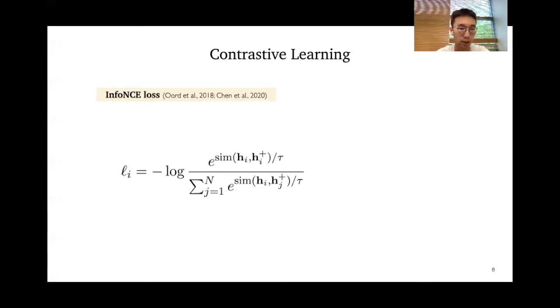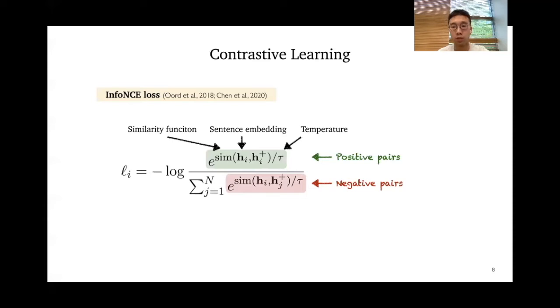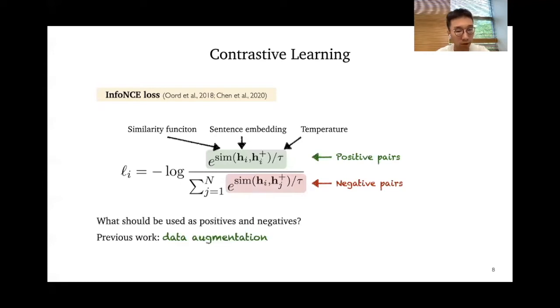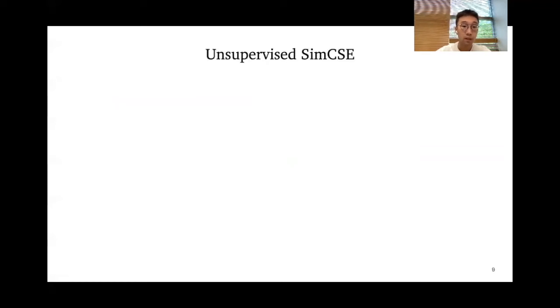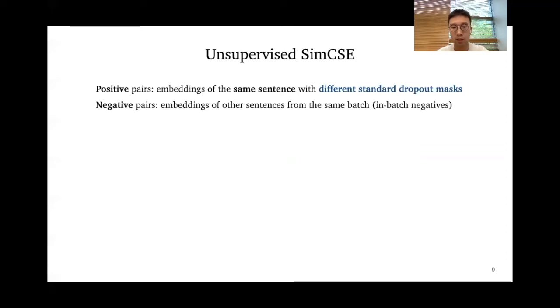To be more specific, how do we do contrastive learning? Here comes the info-NCE objective, which has been widely adopted and looks very similar to the softmax function. Sim here is the similarity function — typically cosine similarity. H is the sentence embedding and tau is the temperature, a hyperparameter. There are two critical design choices: in the numerator, the positive pairs — those you want to pull together; and in the denominator, the negative pairs — those you want to push apart. For the negative pairs, we take all the other sentences from the same mini-batch, called in-batch negatives.